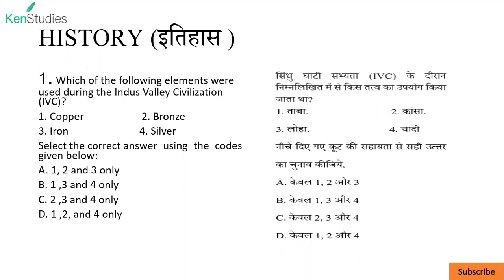You know that iron was not used during that time. Iron was not used during the Indus Valley civilization. So option three will not be correct. Copper, bronze, and silver were used — that means options one, two, and four. So D will be the right answer.